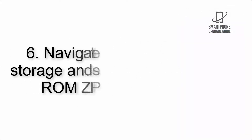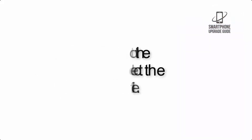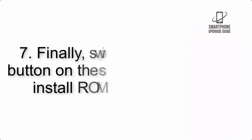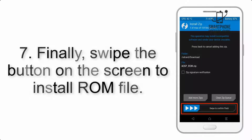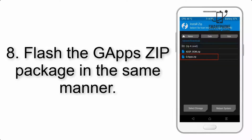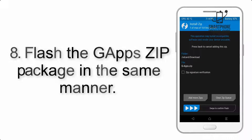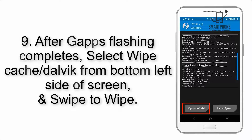Step 5: Go back to the recovery main screen and tap on the Install button. Step 6: Navigate to the storage and select the ROM zip file. Step 7: Swipe the button on the screen to install the ROM file. Step 8: Flash the GApps zip package in the same manner.